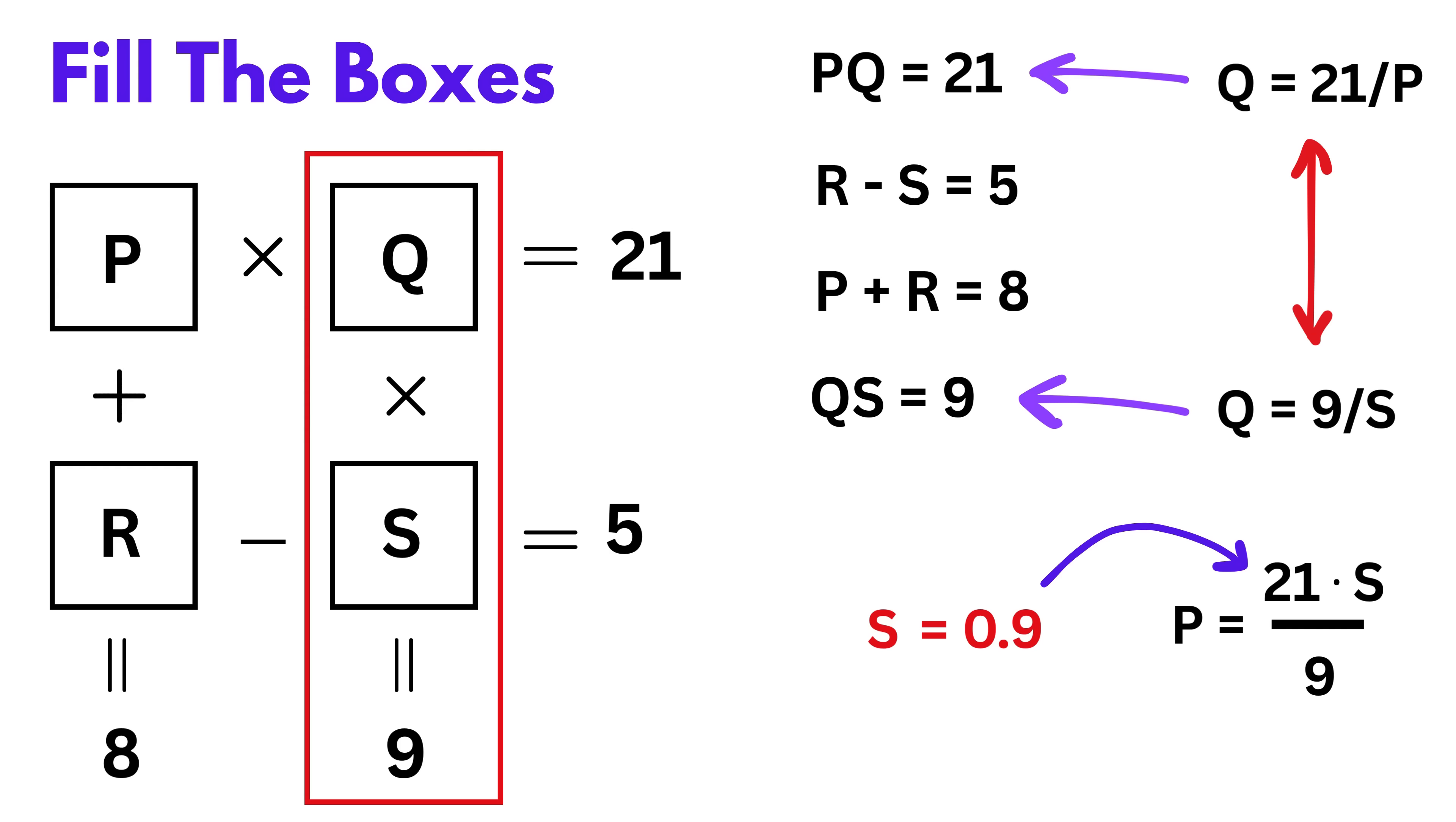Now substitute this back to find P. So P equals 21 times 0.9 divided by 9, which gives us P equals 2.1. Now use this to find R. Since P plus R is 8, we have 2.1 plus R equals 8. So R equals 8 minus 2.1, which is 5.9.